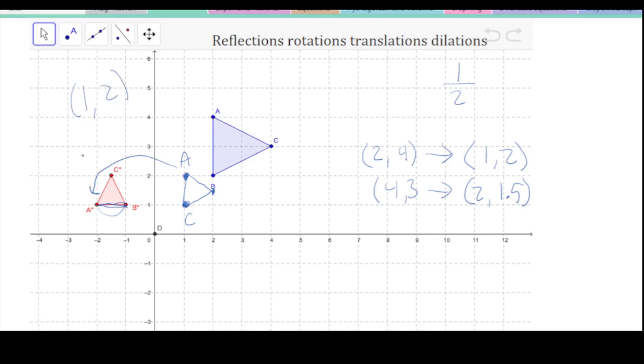We change the sign of Y, and we put it first, negative 2, 1. Oh, and look, that puts us right where we need to be. So it looks like this is a dilation by a factor of 1 half and then a 90 degree rotation.